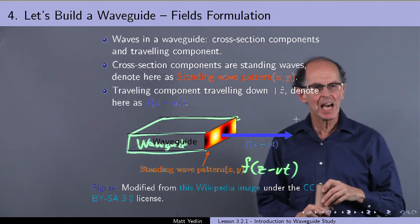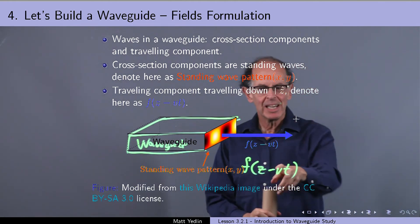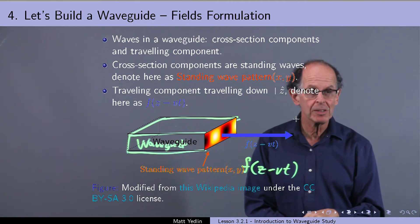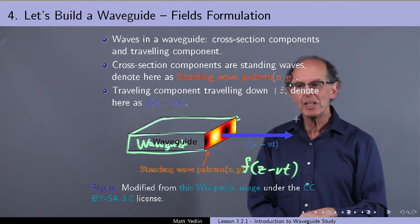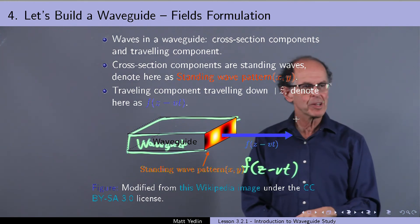And so 1D wave, that's where we started this course. 1D wave complications are in the standing wave pattern in the cross-section of the guide.